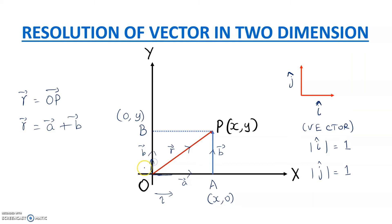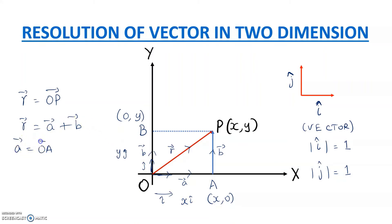Over here on the y-axis you have j-cap. i-cap and j-cap are both equal in dimension. So I can write this length x as x·i-cap, and this length y as y·j-cap. The vector OA can be written as x·i-cap, and the vector OB can be written as y·j-cap.